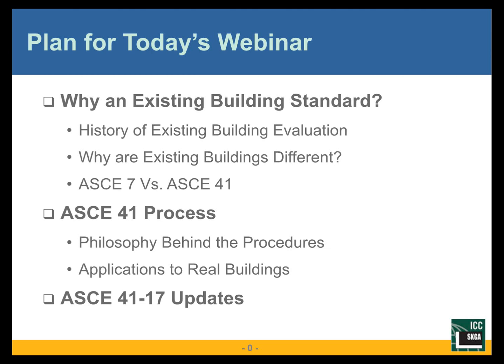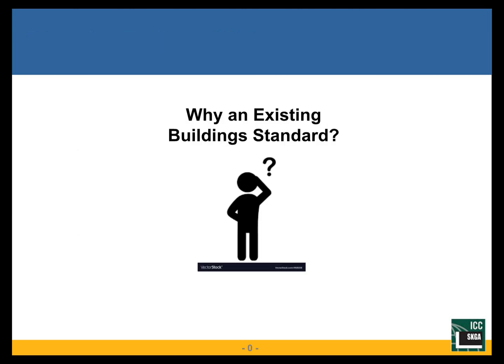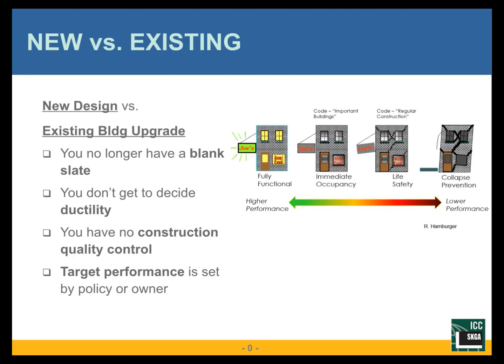We'll also talk again through the AC41.17 updates and a bit on what we expect down the road. So why is there an existing building standard? I've been asked this question several times. We have a new building standard — can't I just use that and take 75%, like the California building code allows, or as other codes often allow? Why do I need to dive into this totally separate standard for existing buildings? I think there's a good reason for that, and hopefully I'll convince you of that reasoning.